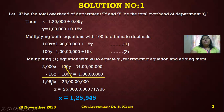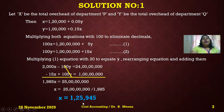So 1985x = 25 crores. Bringing 1985 to the right side as division: x = 25,00,00,000 ÷ 1985 = 1,25,945. That is the total overhead of service department P.